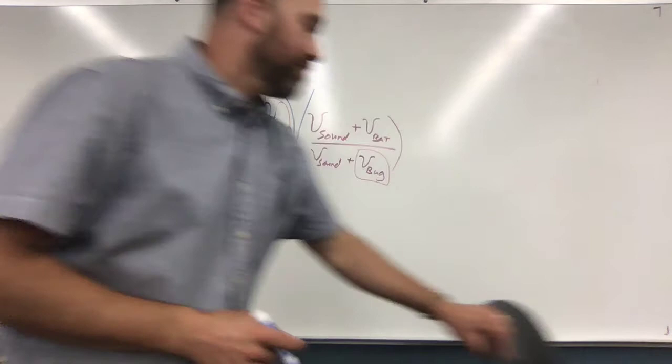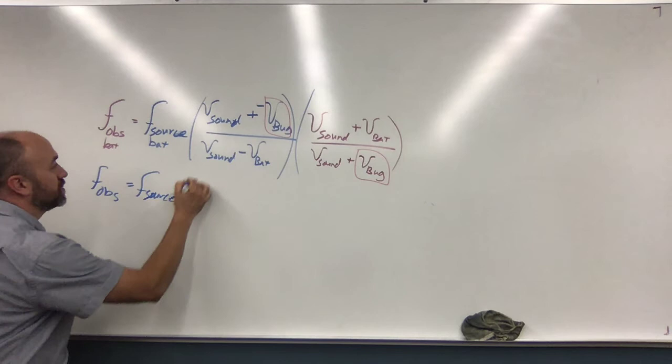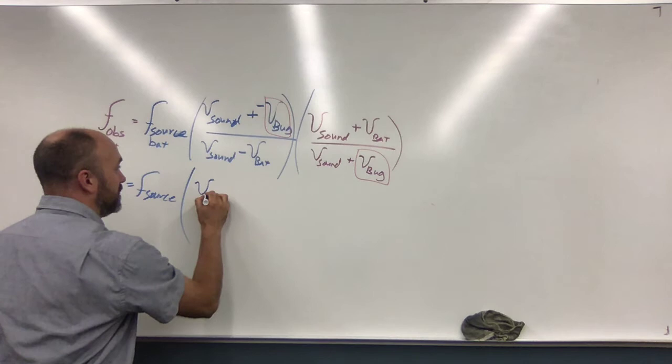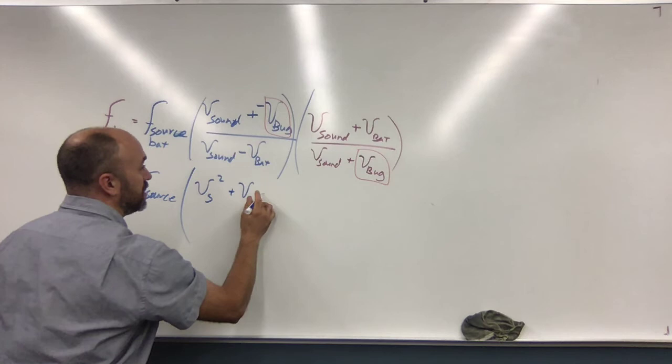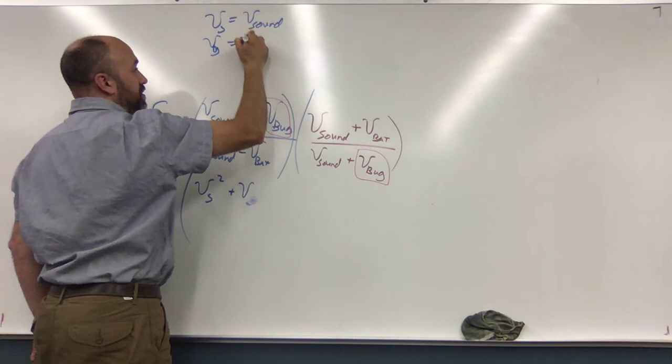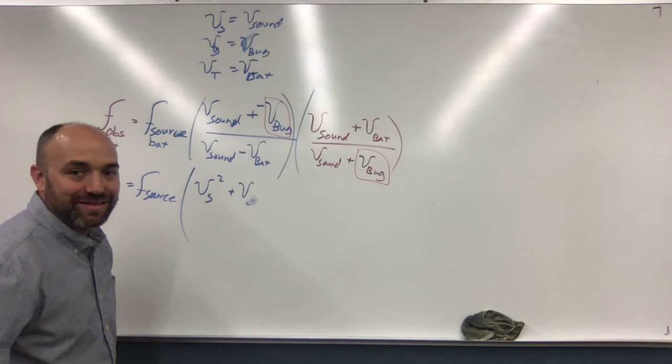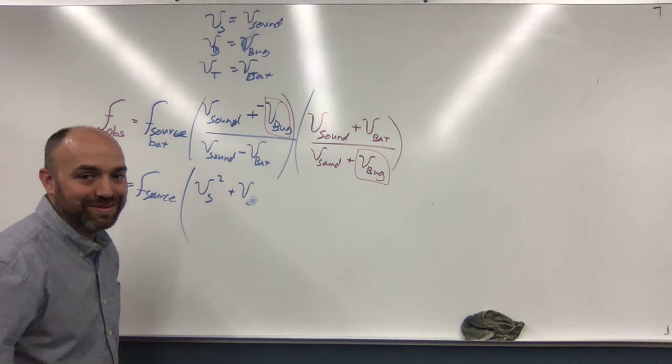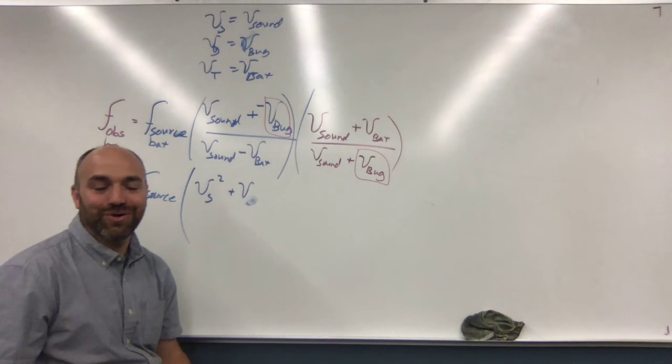So it's gonna be F observed equals F source times—now upstairs we're gonna have V sound squared, that's gonna be your first. And then your second here is gonna be plus V bat. And you know what, I'm gonna use Vs equals V sound, Vg equals V bug, and Vt equals V bat. Is that okay? Just because bug and bat start with the same letter. So Vs squared, and now we're gonna have Vs times V bat.